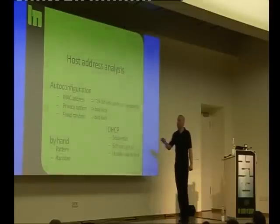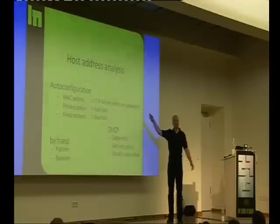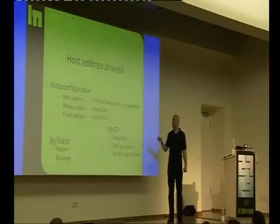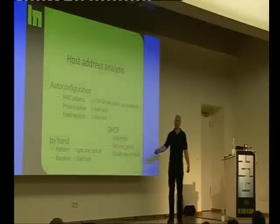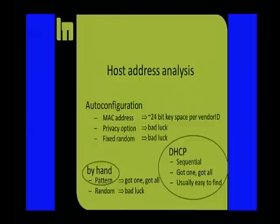With MAC address auto-configuration, you have a 24-bit key space per vendor ID — this is scannable. The privacy option is just bad luck for an attacker. Hand-configured with a clear pattern: easy once you see the pattern. If random: doesn't work. DHCP in the address space: piece of cake once you find an address in that space.